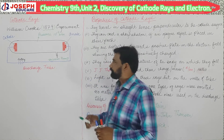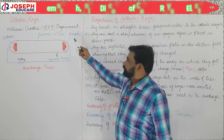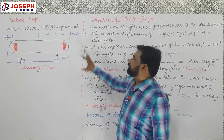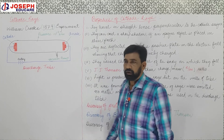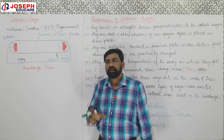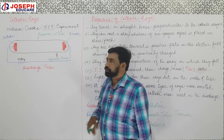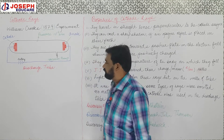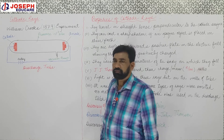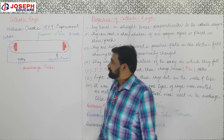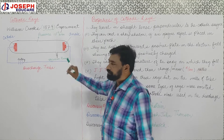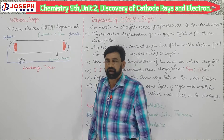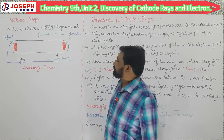Students, William Crookes in 1879 performed an experiment, and the apparatus used for that experiment was known as the discharge tube. Let us first understand what a discharge tube is — let's learn its structure. Structure of discharge tube.